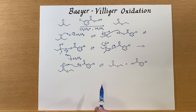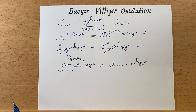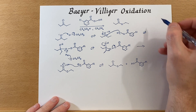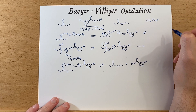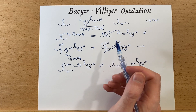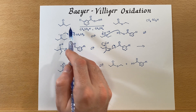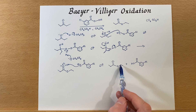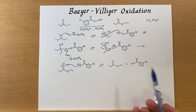So that's the Baeyer-Villiger oxidation. You'll notice that I did choose a symmetrical ketone for this, and I used MCPBA. It's also possible to use other peroxy acids, such as CF₃CO₃H — a fluorinated one. One of the nice things about using a symmetrical ketone is we don't have to think about which carbon the oxygen attacks, or which part becomes the alkanoate side. Both sides are symmetrical, so it didn't matter.